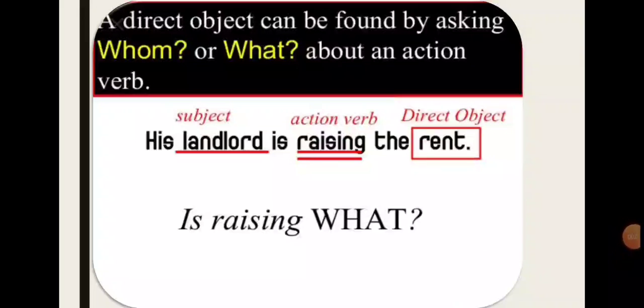A direct object can be found by asking whom or what about an action verb. For example, his landlord is raising the rent. In this sentence, landlord is a subject, raising is an action verb and rent is a direct object.